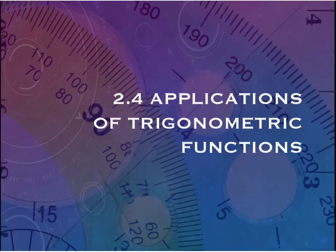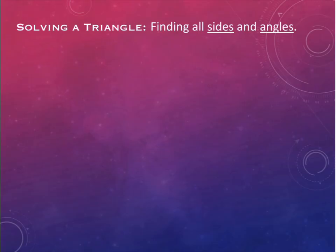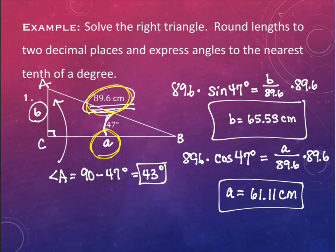We started section 2.4 last time and did one example about solving triangles - finding all of the angles and sides in a triangle. The information we need is three pieces: the right angle itself is one piece, and then we have two others. On that example we had the angle 47 at the bottom right and the hypotenuse 89.6.